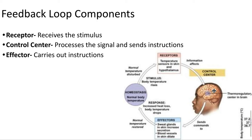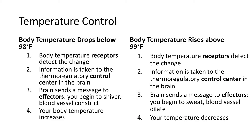The brain will send a response that travels to effectors — in this case, your sweat glands. So you're going to start sweating, and through sweating, bring your body temperature back down to homeostasis. To recap: a feedback loop has three parts — a receptor which picks up information, a control center which makes sense of it, and an effector which carries out an instruction.